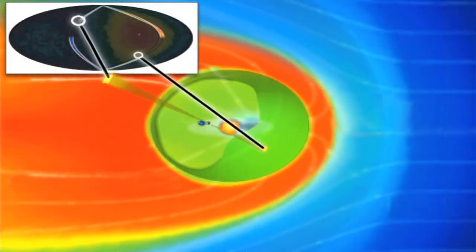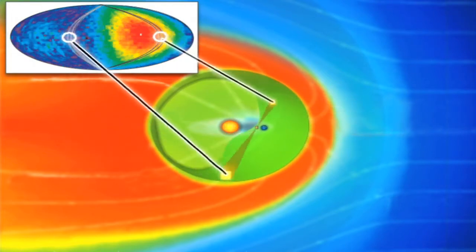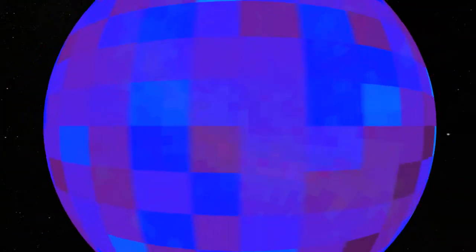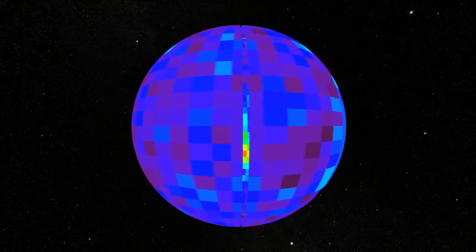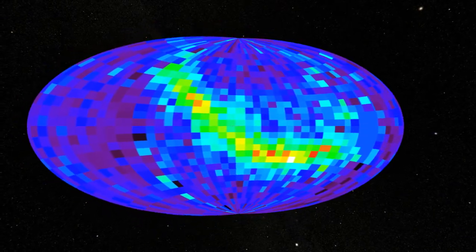Over the course of six months and many orbits, IBEX can paint a picture of the entire sky in ENAs. For easier viewing, the sphere of the sky is unwrapped and projected onto an oval, much like how a map of the spherical Earth is projected onto a rectangle.